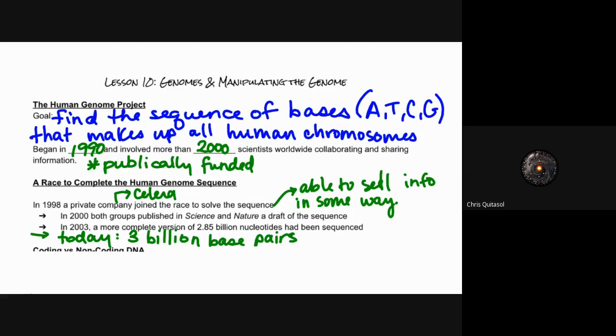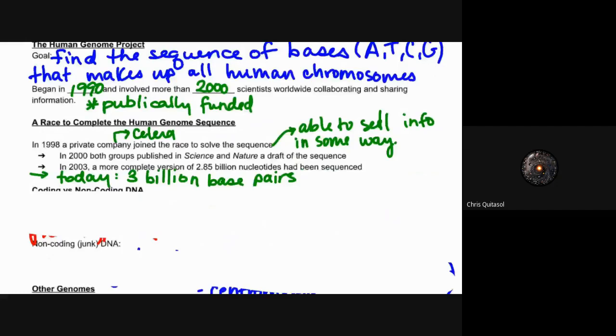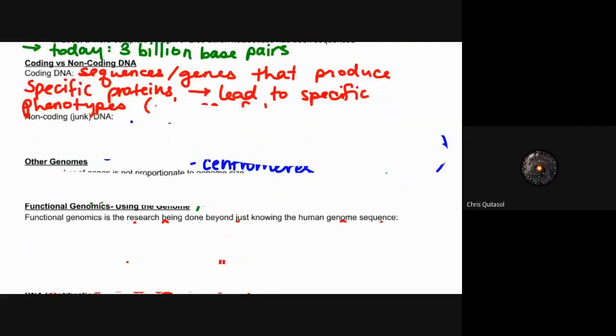And how they create that continuous versus discontinuous inheritance pattern that we saw throughout this entire unit. We can start to look at specifics with regards to coding and non-coding DNA. Coding DNA, as you could guess, refers to the sequences or the genes that produce a specific protein that lead to specific phenotypes, which allow for those traits to be expressed. Only about two percent of bases are coding.